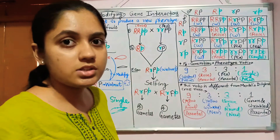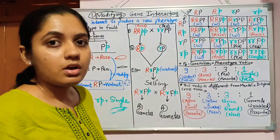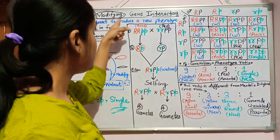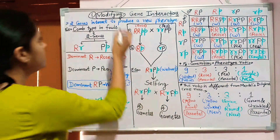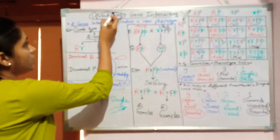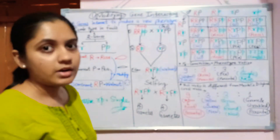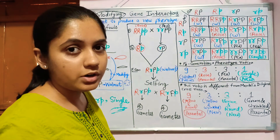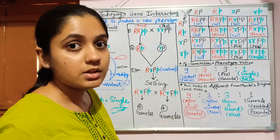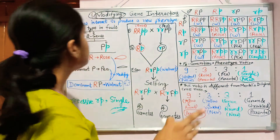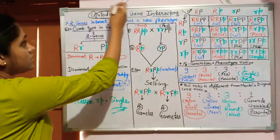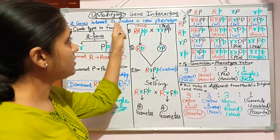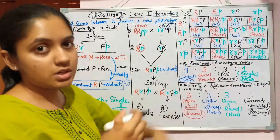Intergenic gene interactions have six to seven types. This is the first type, that is the modifying gene interaction. The word 'modifying' means change. In this type of gene interaction, any type of change takes place.